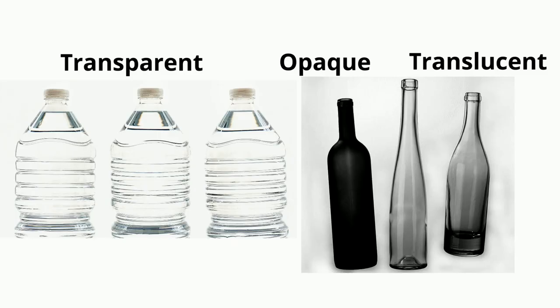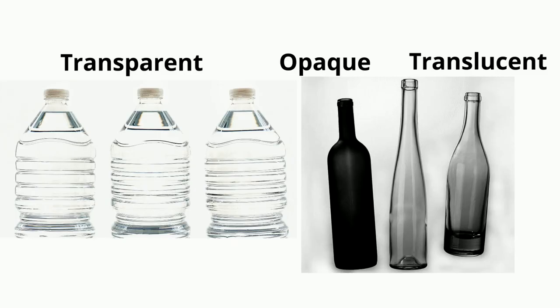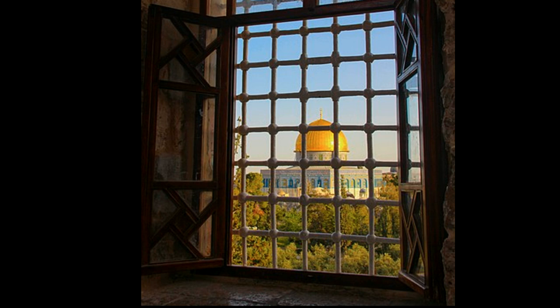And here they are all together. This window is transparent and very clear. The windows are translucent and the objects are not clear. The cup is opaque.